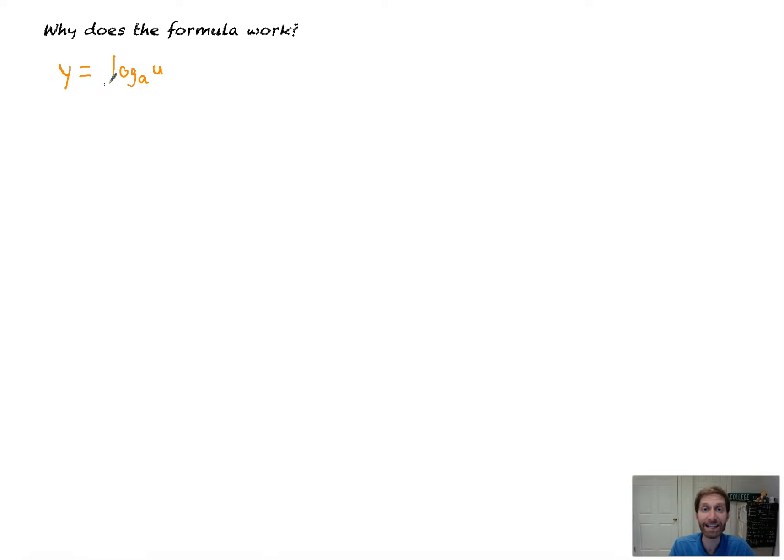I'm actually going to rewrite this in exponential form. So y equals log a to the u is true if and only if a to the y is equal to u. That's using the definition of a logarithm. Now, from here, what I'm going to do, believe it or not, is take the ln of both sides. And when I do that, the y will jump out front. So if I take the ln of both sides like so, the y jumps out front.